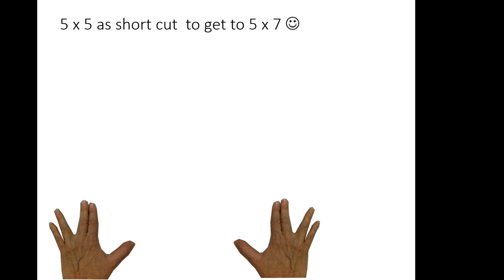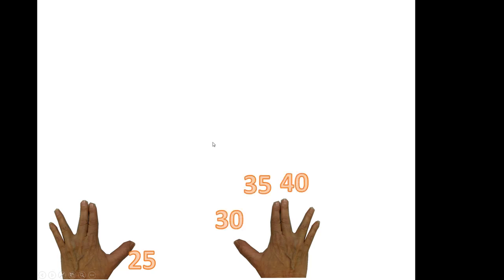For five times seven: twenty-five, thirty, thirty-five, forty. Five times eight is forty, half of eight is four.